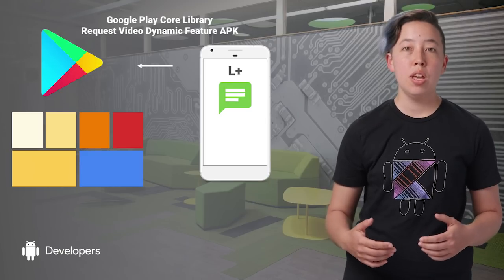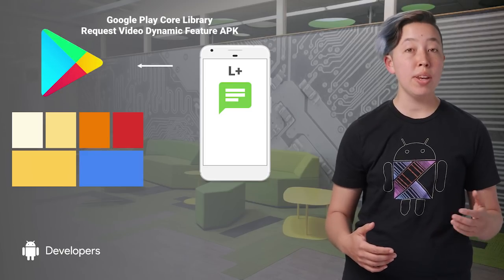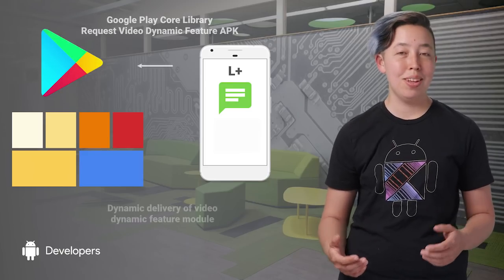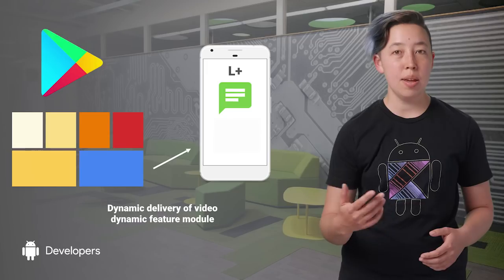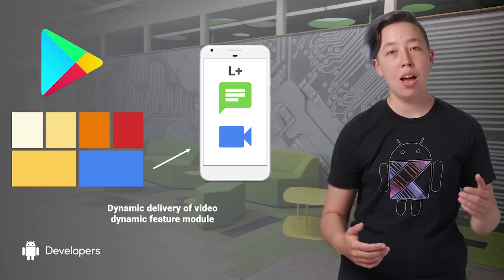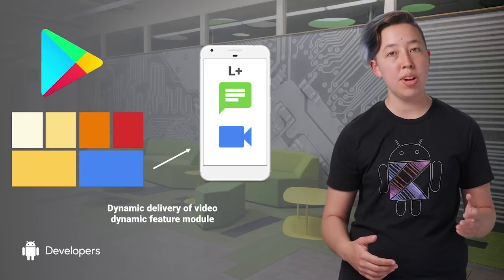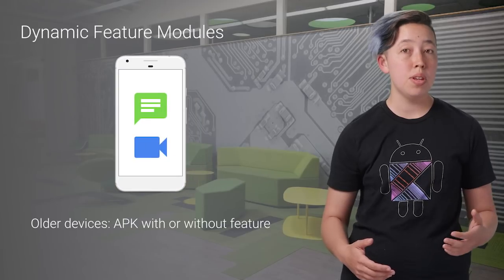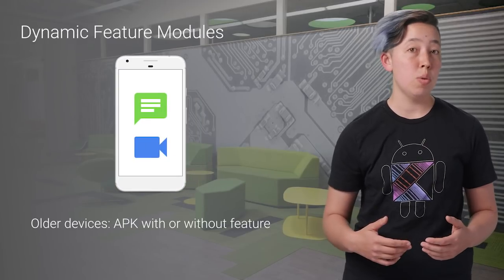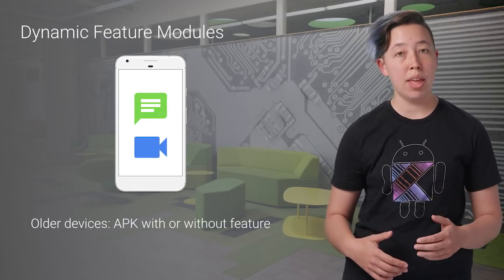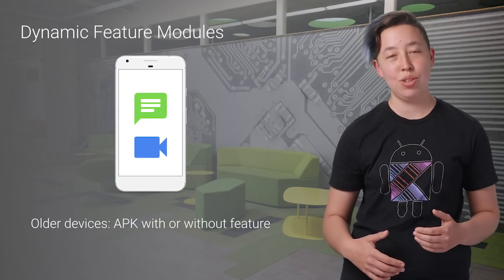Using the new Google Play Core Client Library, you can specify when your app should request the feature from Play. Then, Dynamic Delivery will send the feature APK on demand to devices running Android L or higher. And for older devices, you can decide whether to install the APK with or without the Dynamic Feature included.